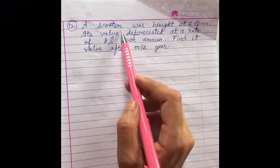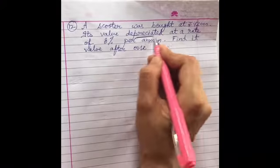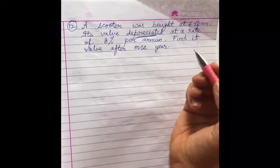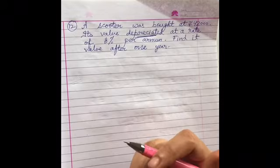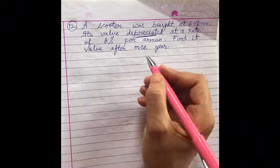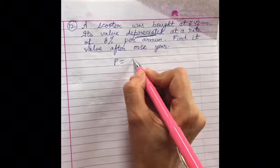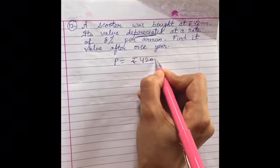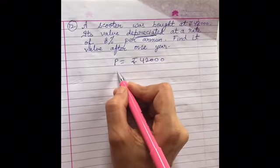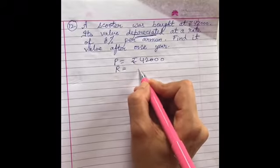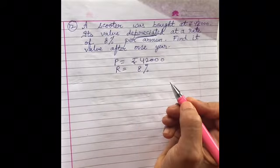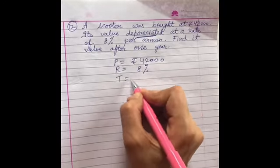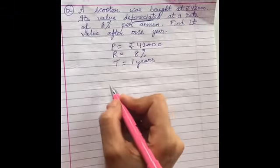Now we are using the same for the calculation of depreciation. We can use it for appreciation as well. Depreciation means the decrease in value. Here the initial price of a scooter is 42,000 and the rate of depreciation is 8 percent. The value is decreasing, and after one year we have to calculate its value.